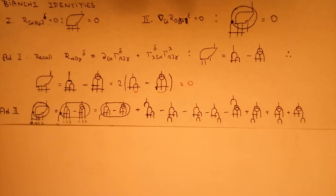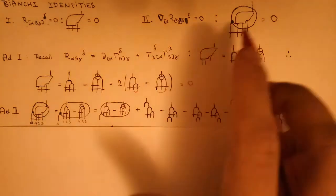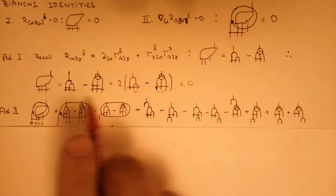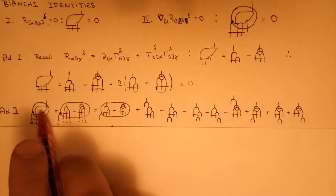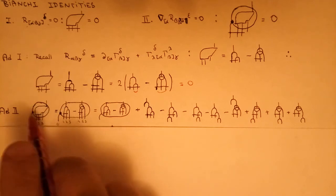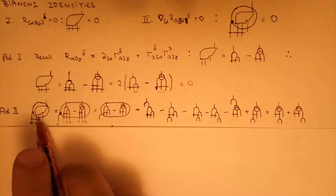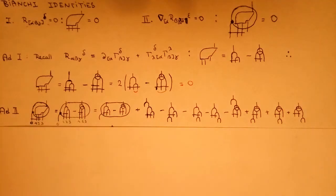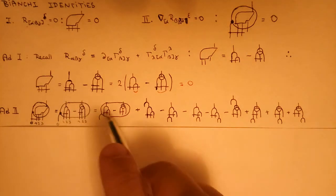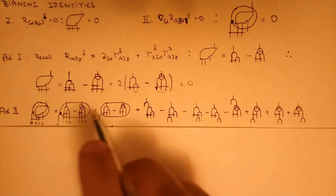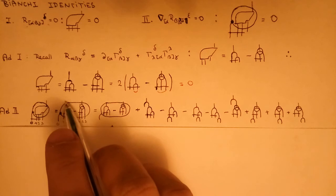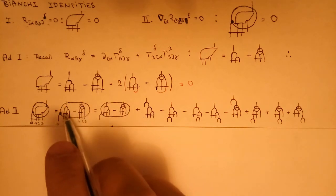Now let us focus on the second Bianchi identity. I will substitute this formula into the identity, so this is just a covariant derivative of this. First I will dismiss the bar of anti-symmetrization, and I will add this bar later on. Let me remind you what the covariant derivative does: just take the partial derivative and add Christoffel symbols.